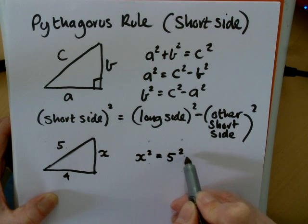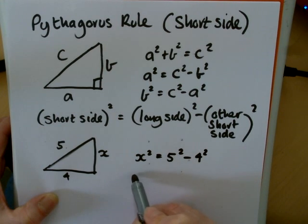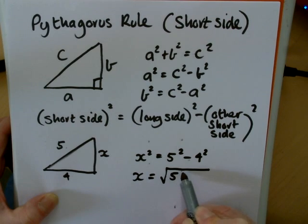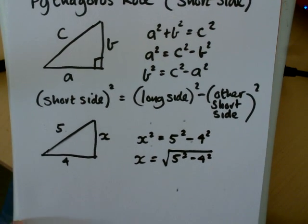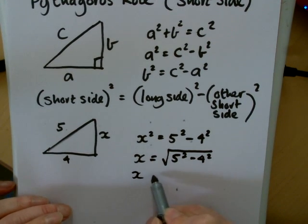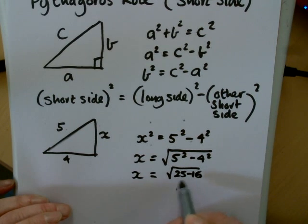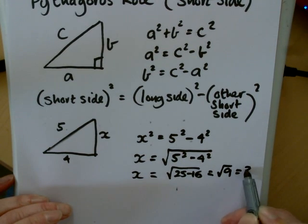will equal 5 squared minus 4 squared. So x will equal the square root of 5 squared minus 4 squared. And that really can be done without a calculator. That's the square root of 25 minus 16, which is the square root of 9, which is 3.